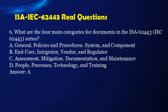Question 6. What are the four main categories for documents in the IEC 62443 series? a. General, policies and procedures, system, and component. b. End user, integrator, vendor, and regulator. c. Assessment, mitigation, documentation, and maintenance. d. People, processes, technology, and training. Answer: a.